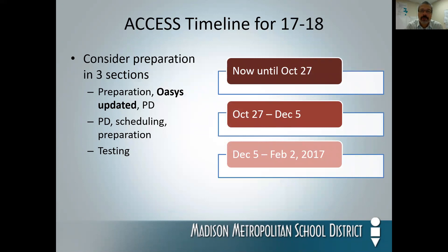The timeline for 2017-18 is as follows. We're already through the October 27th deadline, which is really the preparation phase. Most importantly, it involves updating the OASIS for those students who have IEPs — we'll talk about that in a moment. After that, we're going to focus on professional development and building schedules. Finally, the test window opens December 5th and closes on February 2nd.